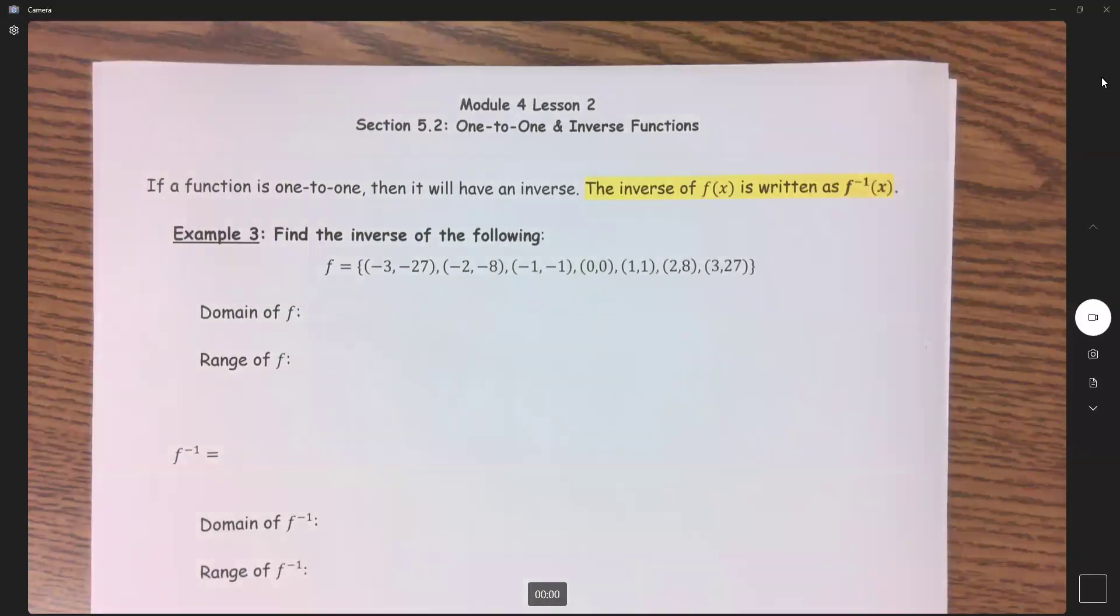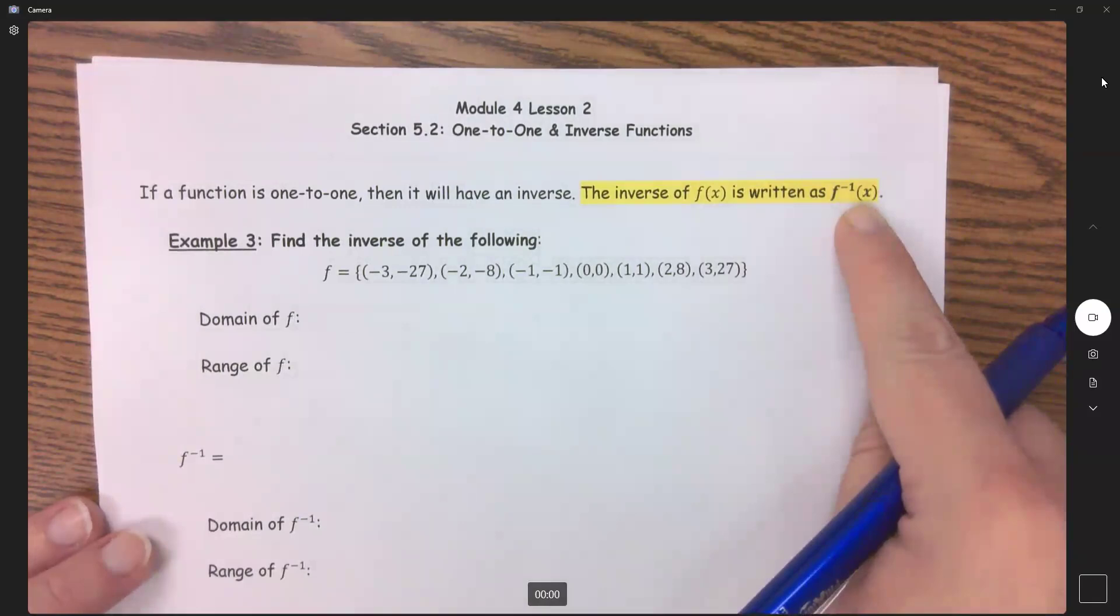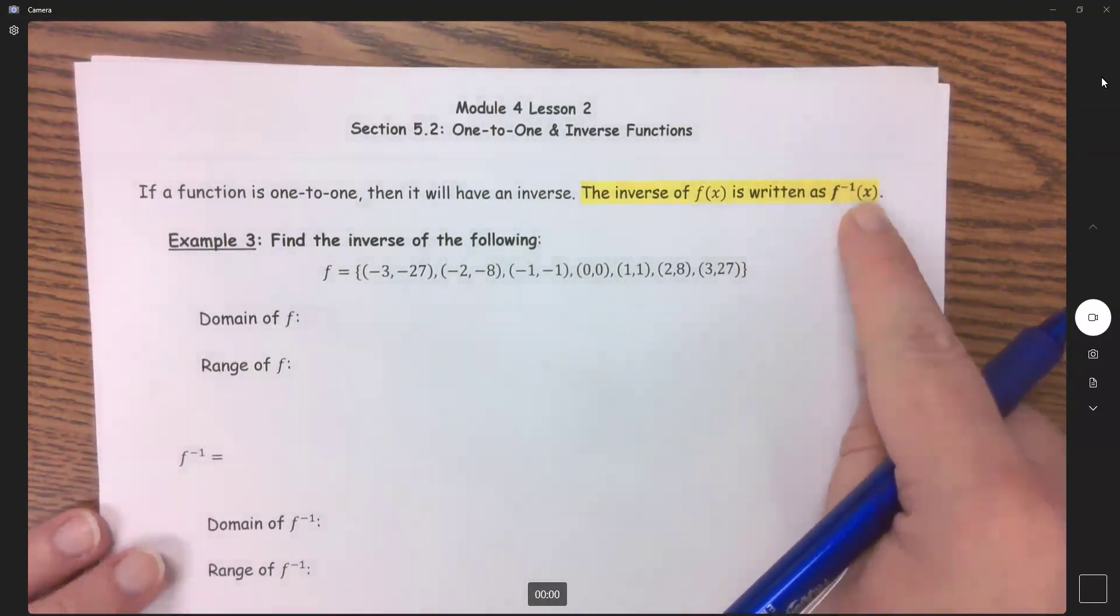Now that we've covered what a one-to-one function is, now we can start covering what an inverse function is. These two are related. So it says if a function is one-to-one, then it will have an inverse. The inverse of f(x) is written as this notation right here. So the inverse of x.